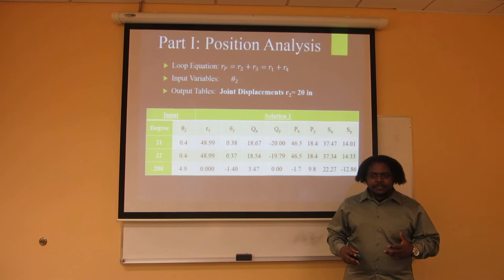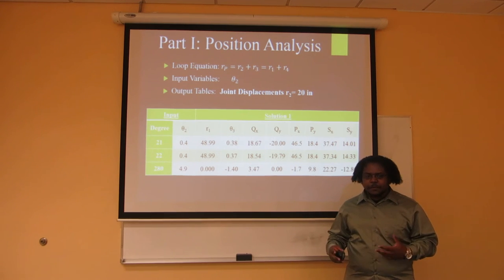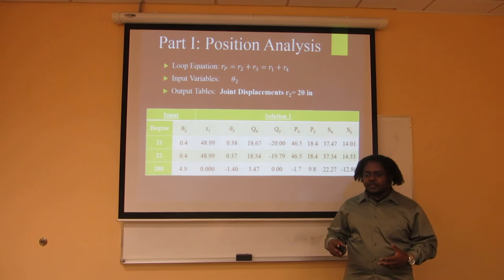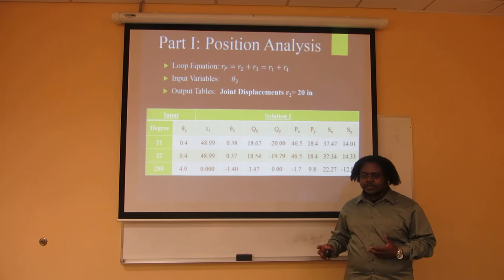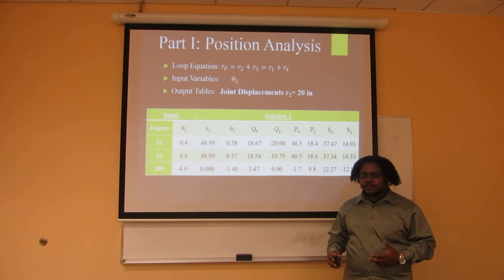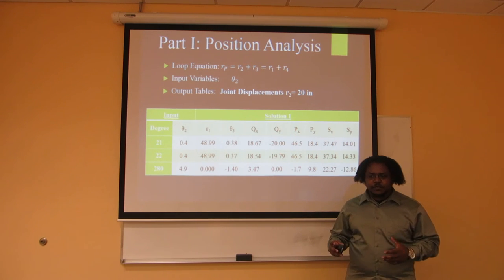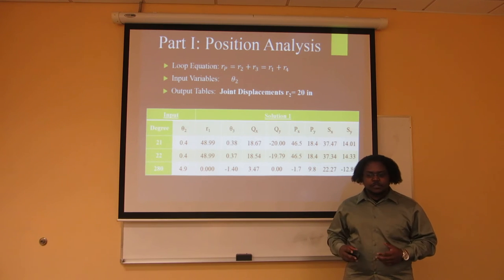For the position analysis, it required an increment increase of 1 degree, but since the driving input R1 cannot be broken down into those factors, theta 2 was chosen as an input variable for this position analysis and R1 was calculated, and therefore R3 was calculated afterwards. From there, you can see on the chart that the points for each Q, P, and S were calculated by their respective x and y values. The degrees on the left side of the chart represent the closure angles for the maximum R1 values.